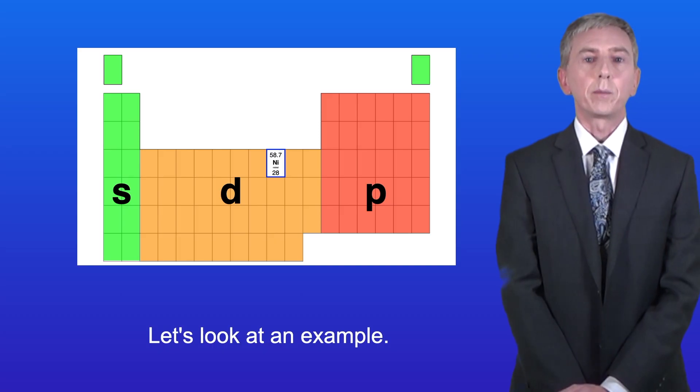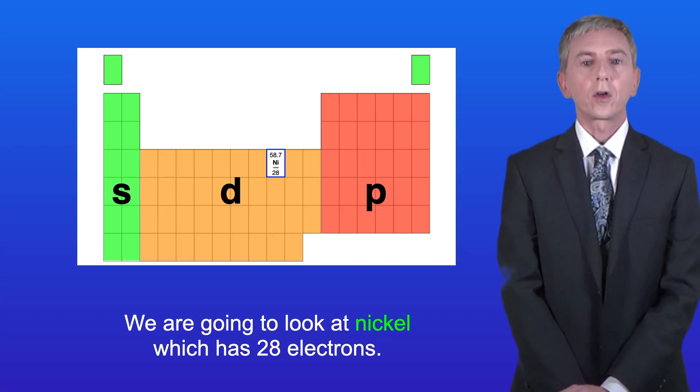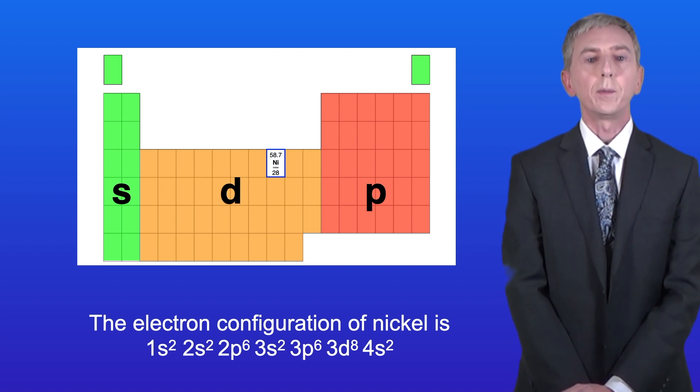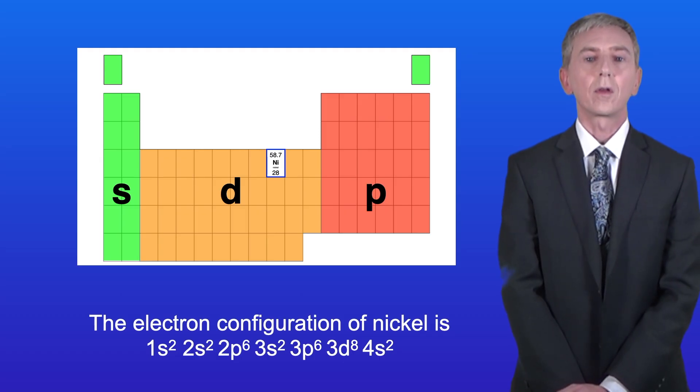So let's look at an example. We're going to look at nickel, which has 28 electrons. The electron configuration of nickel is 1s² 2s² 2p⁶ 3s² 3p⁶ 3d⁸ 4s².